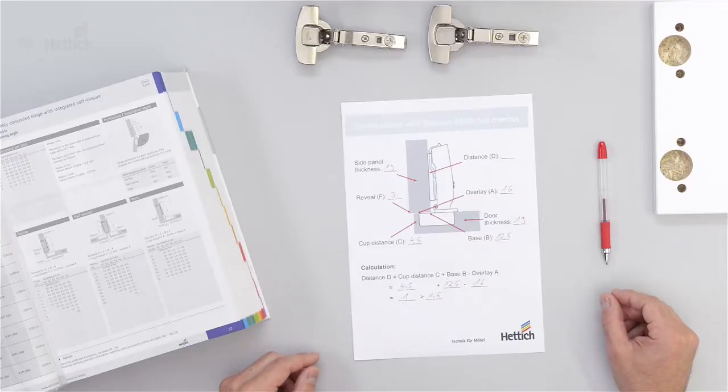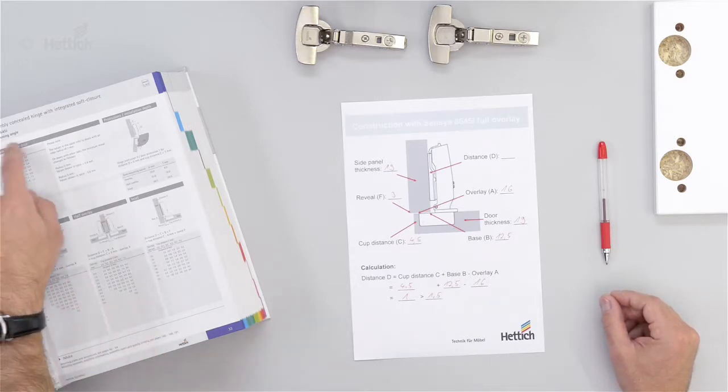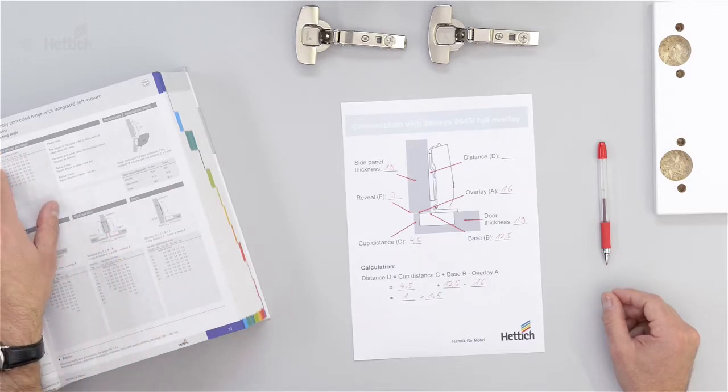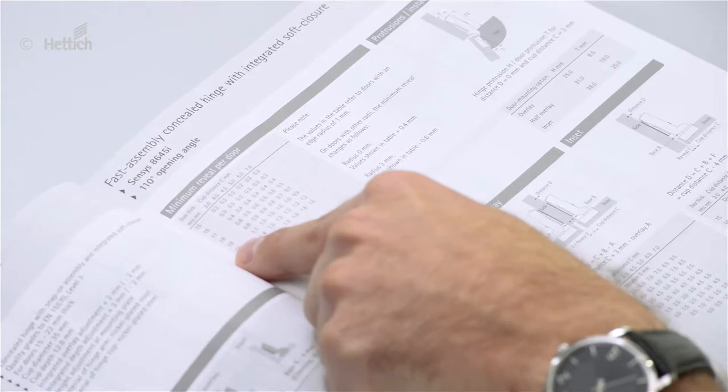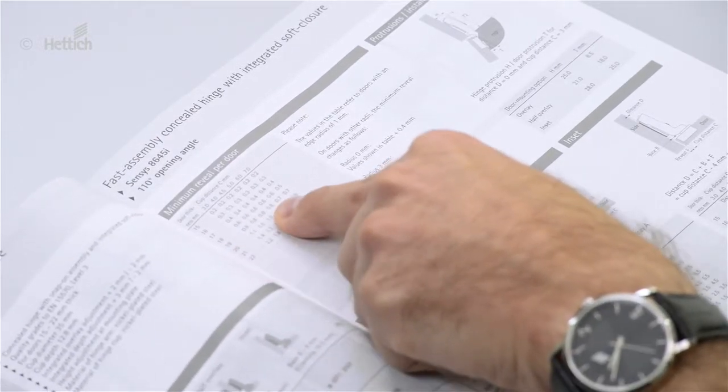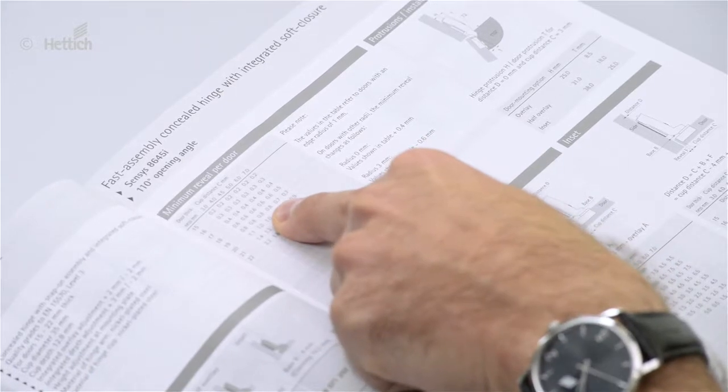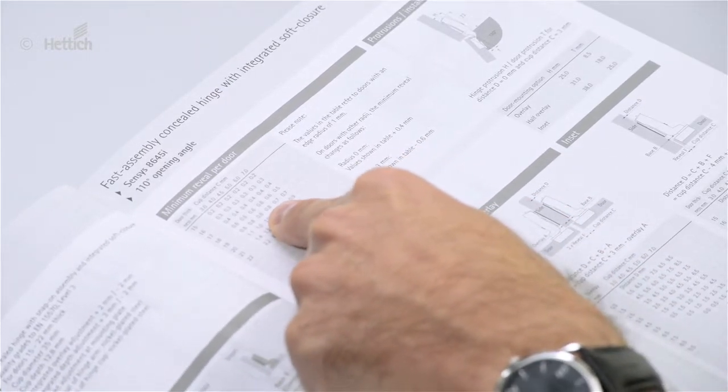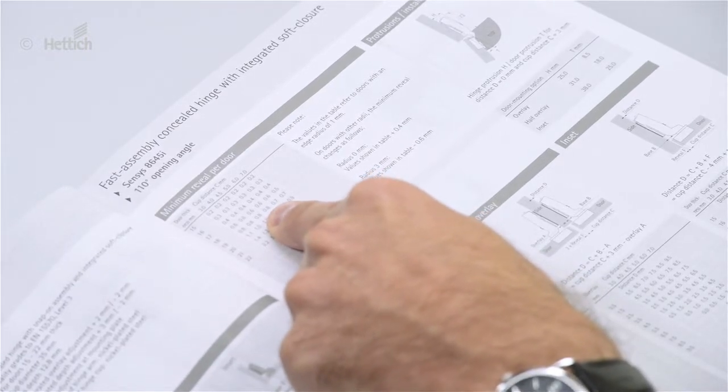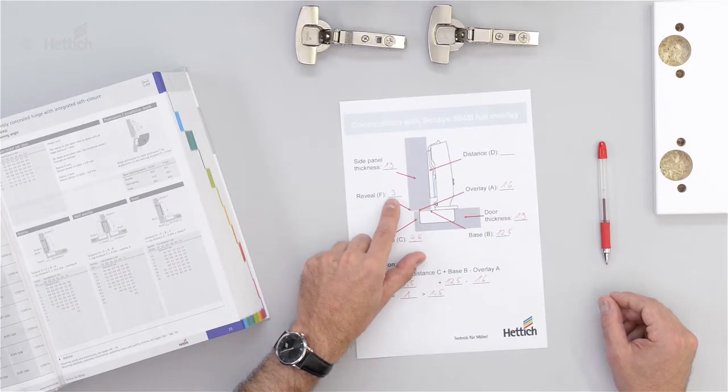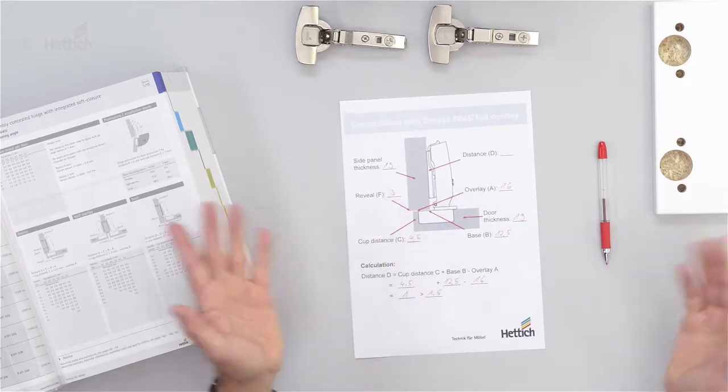In the last step we have to cross check the minimum reveal. We have a little table here in the catalog and the door thickness is 19 mm that was given and also the cup distance C of 4.5 mm. So the minimum reveal has to be 0.8 mm. We have in this example a reveal of 3 mm so it's all good.